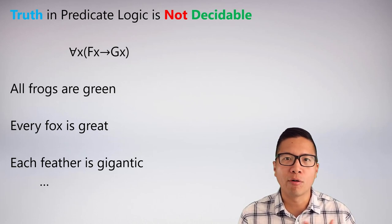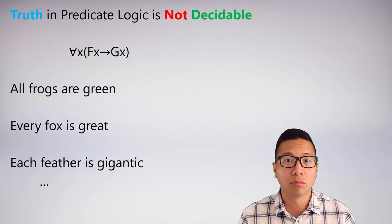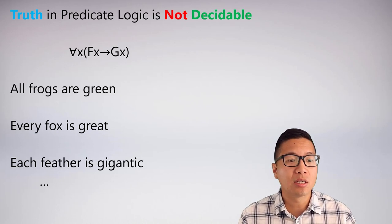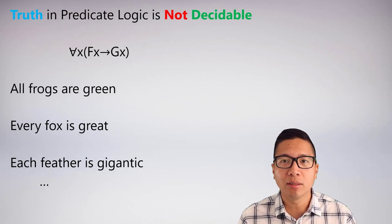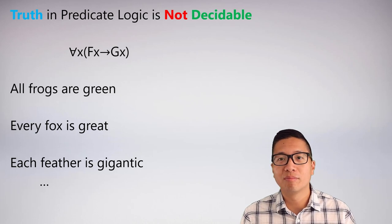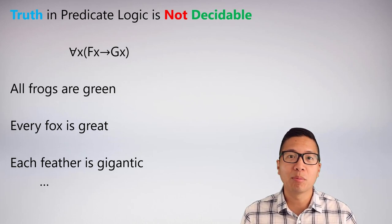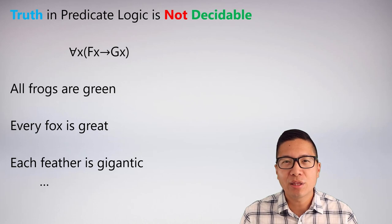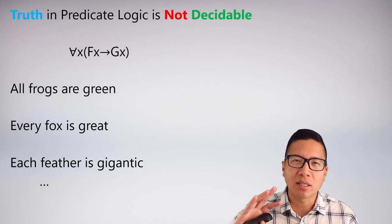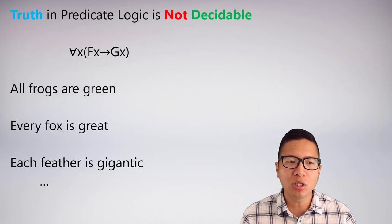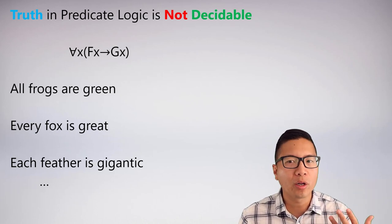So here the statement could mean all frogs are green. Is that true? Well, no. Is it the case that every fox is great? Is that true? Well, maybe. Is every feather gigantic? Probably not. And the thing is, once you realize that this hinges on what f and g are, you can see that this will go on and on forever.